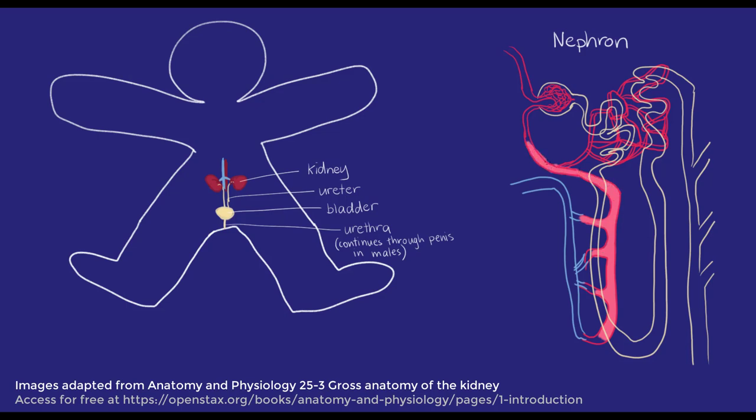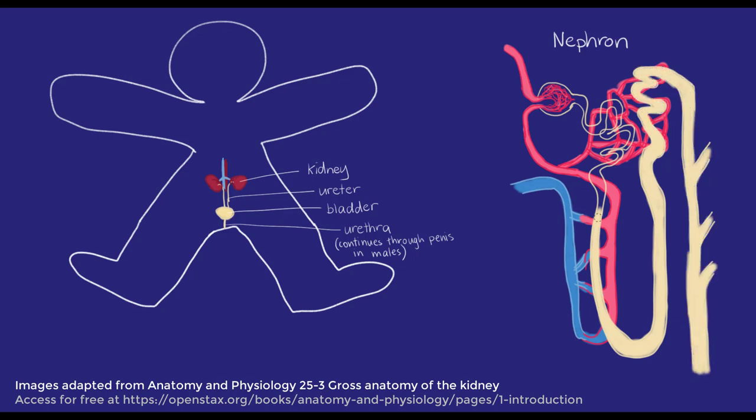The ingoing blood enters a special capillary network, called a glomerulus, and is surrounded by the nephron's tubule end. The tubule then undergoes various twists and turns, a long loop down and up, and a collecting duct.